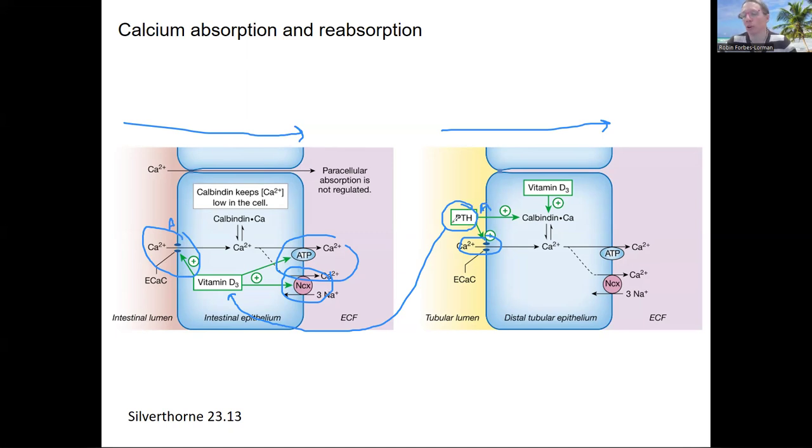And calcium can flow passively down through those channels down the concentration gradient. It's then going to move down the basal membrane in both of these cases through two different mechanisms. One is this antiport. So sodium enters and calcium leaves. Why does sodium enter? There's a gradient for sodium to enter. So this is secondary active transport.